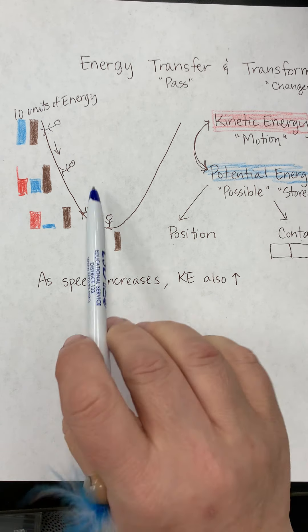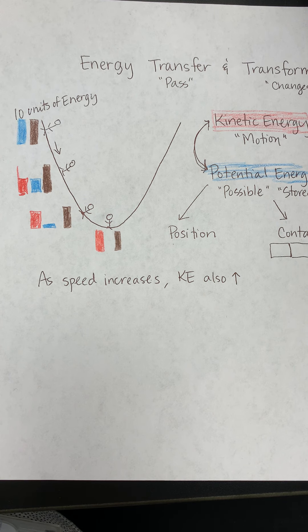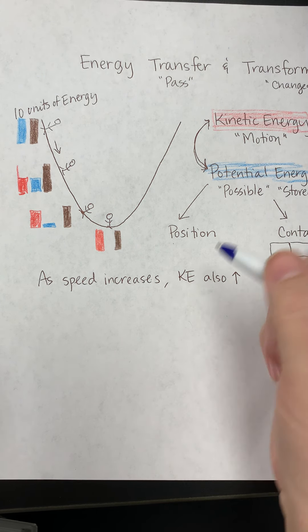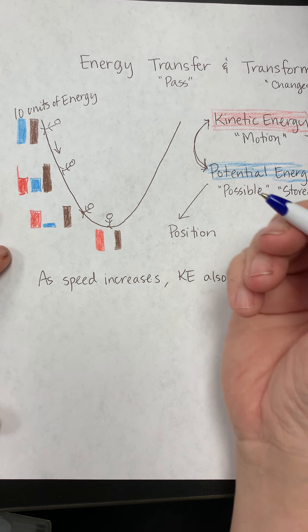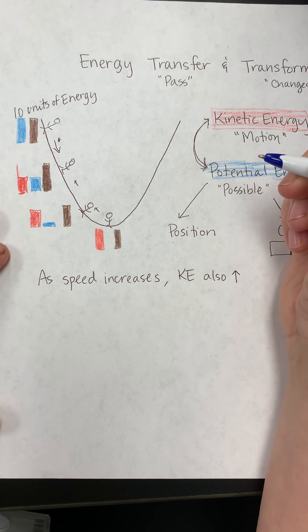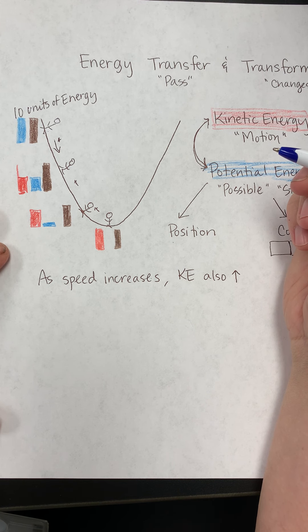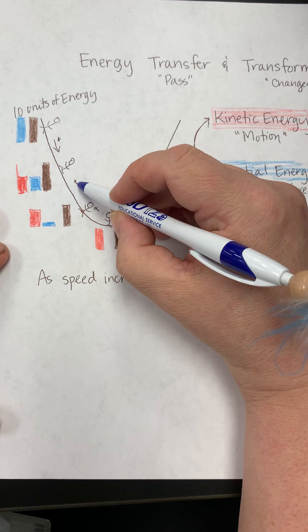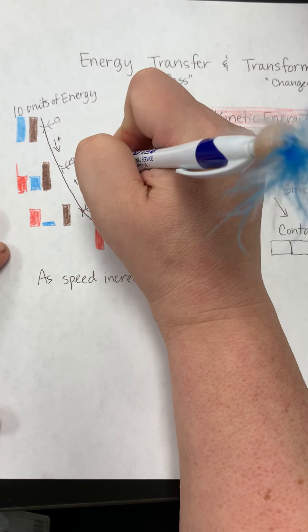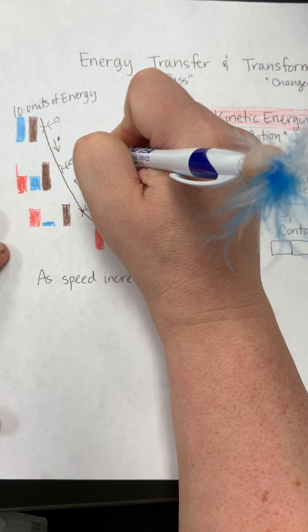Now, in reality, eventually, this skateboarder is going to stop. And the skateboarder is going to stop because the amount of energy stays the same. However, there are now forces that we know of that are resisting the motion. And so, therefore, some of the energy goes into this sort of resistance, if you will.